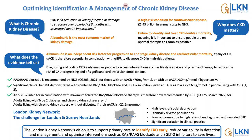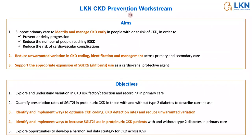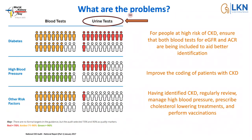Albuminuria really is a common issue with CKD. The aims and objectives for the London Kidney Network are around early identification, with a strong focus on coding. That links through to management, particularly SGLT2 prescribing, as well as all the other management that should be happening around statins, blood pressure control, and so forth.